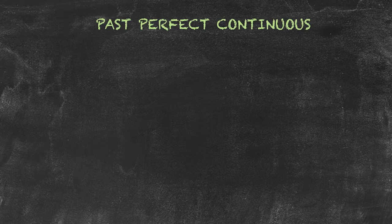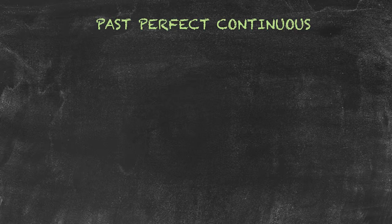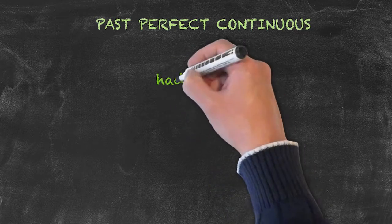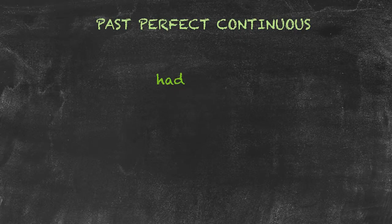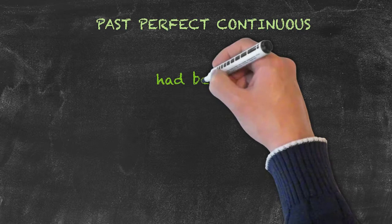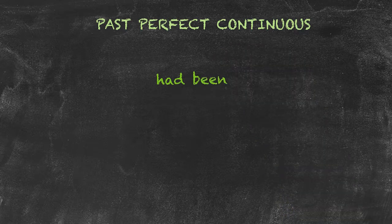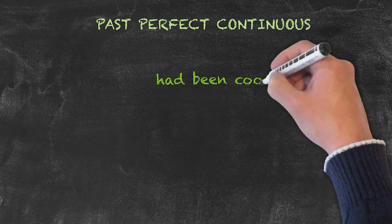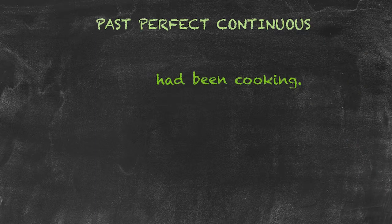In order to form this tense, what we need are two auxiliary verbs. We need our auxiliary verb have conjugated into the past, so it turns to had. We use our auxiliary verb be with our present participle form of the main verb, which is the verb plus ing, and be being conjugated into the past as well.